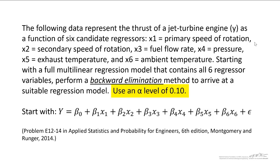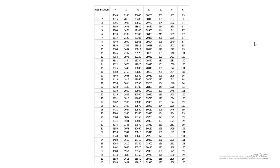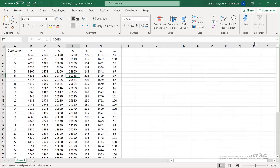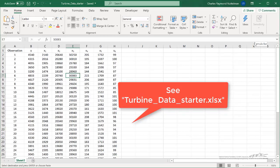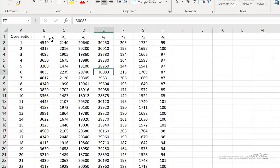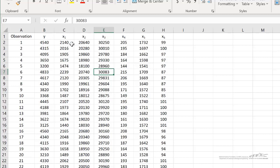That is, in order for us to retain a coefficient in our model, it has to have a p-value of less than or equal to 0.10. So I've got the data shown here. I've got this in an Excel file. This file is called Turbine Data Starter. We've got our observations, our y values over here, and our x values. x1 through x6 depend upon different parameters.